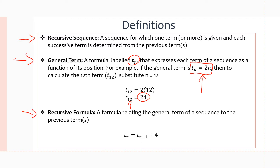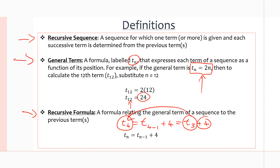Lastly, we have the recursive formula, which is a formula that relates the general term of a sequence to the previous terms. The formula uses the previous term to calculate the following term. For example, Tn equals Tn minus 1 plus 4. If you wanted to find T4, you would use T4 minus 1 plus 4, which equals T3 plus 4. So to find the term at position 4, we use the term at position 3, add 4, and get the term in position 4.